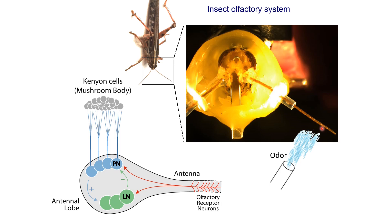On the antenna there are olfactory receptor neurons. These neurons send their axons to an area of the brain called the antennal lobe, which is the first olfactory processing center in the brain. It contains two types of neurons: projection neurons and local neurons, and these neurons then project to higher areas.